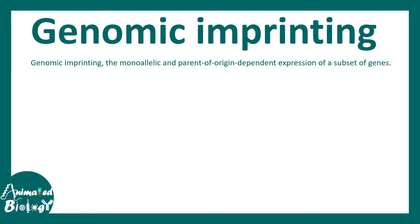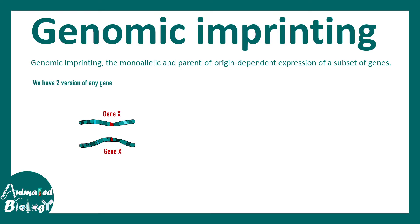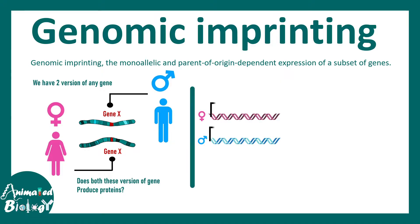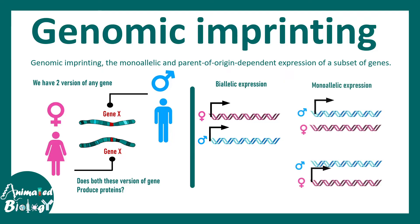In this video we'll be talking about genomic imprinting. Genomic imprinting refers to the monoallelic and parent-specific expression of a subset of genes in our genome. We have two versions of any gene — for example, gene X would have a version coming from the mother and one from the father. Most genes are expressed from both versions, but in some cases genes are expressed only from the mother or only from the father. Those have monoallelic expression and are known as imprinted genes.